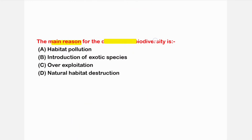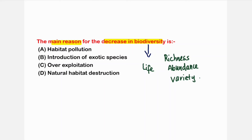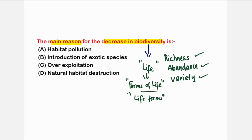The next question: what is the main reason for the decrease in biodiversity? Biodiversity means bio — life — and diversity — richness, abundance, variety. So biodiversity refers to the variety of life forms present on this earth.